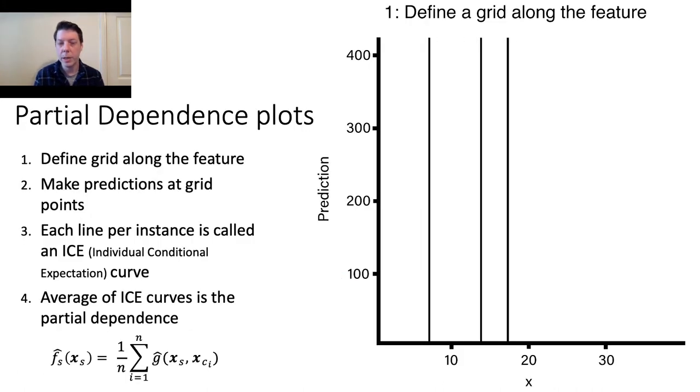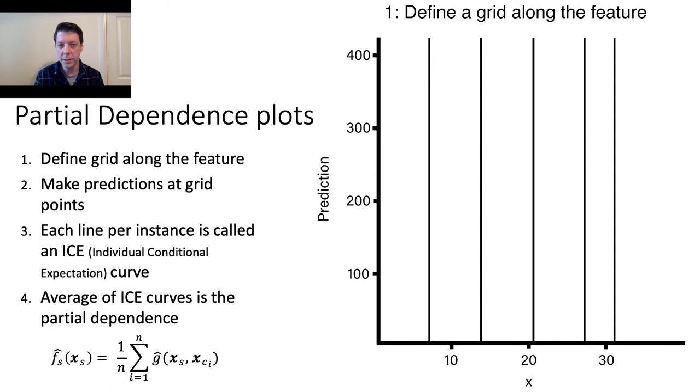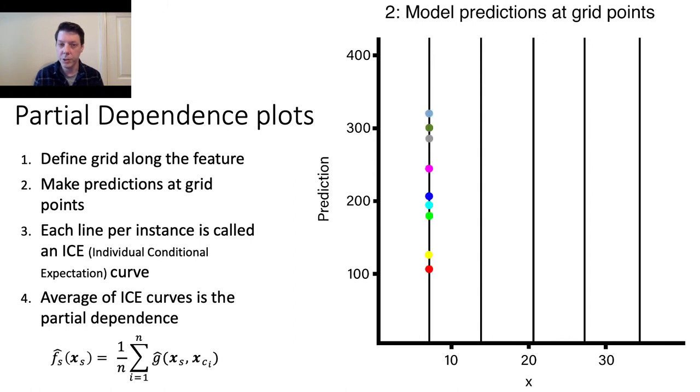Now I'd like to briefly talk about how partial dependence plots, or PDPs, are constructed. To begin, we define a grid along a feature, then we model predictions at each grid point.